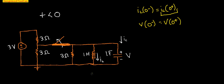In steady state, inductors short and capacitors open. This makes things easier to solve for our current and voltage. If we're looking for the voltage across the capacitor, that's easy because we just created a short circuit right here. So the voltage across this capacitor has to be zero volts.